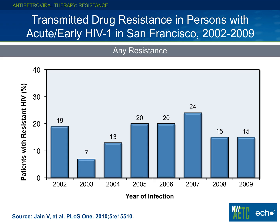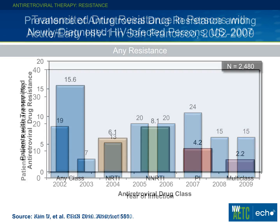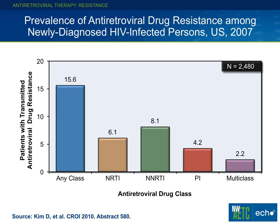In the last several years of that study, resistance rates ranged around 24%, 15%, and 15% — so significant resistance. This CDC study looked at a different group: individuals not necessarily in the acute or early setting, but individuals that were newly diagnosed.